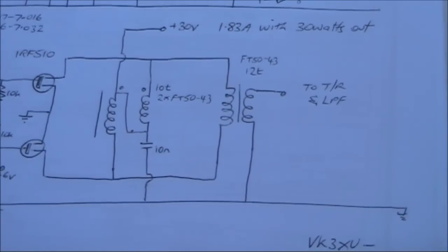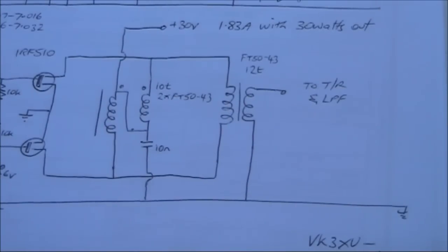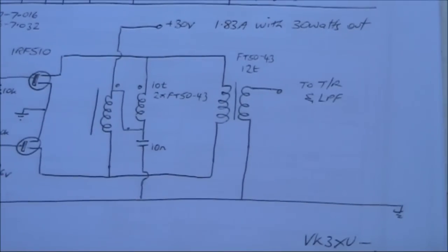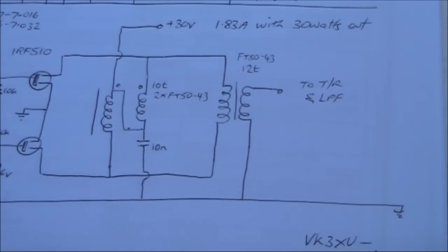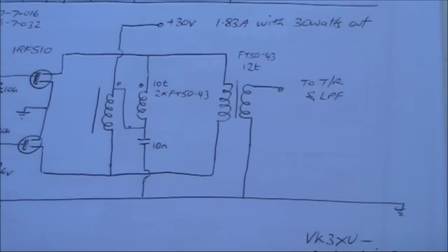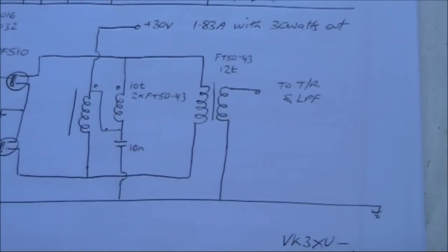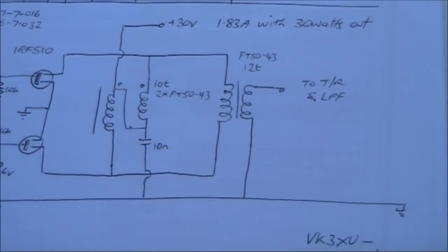Then we've got another FT50-43. In this case, only a single toroid. 12 turns of wire, twisted together in a drill. Anyway, they are wound over the toroid. And that gets you to your transmit power amplifier output.